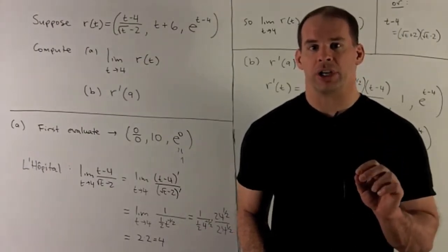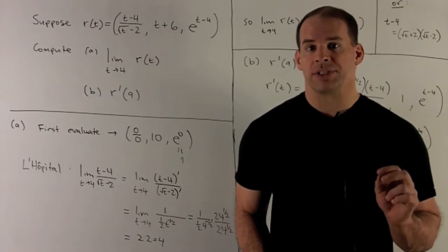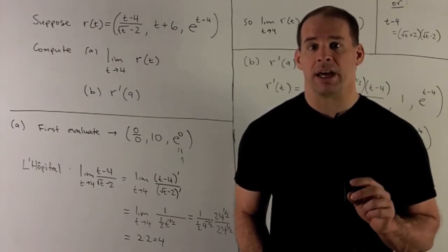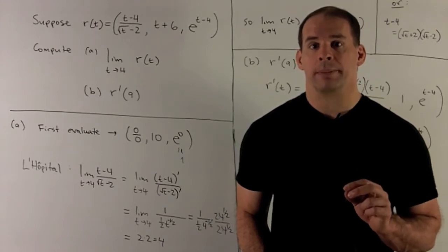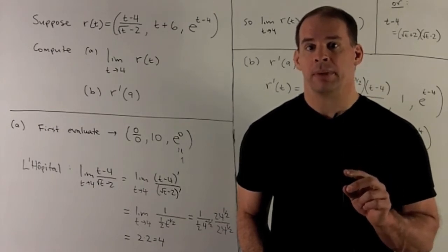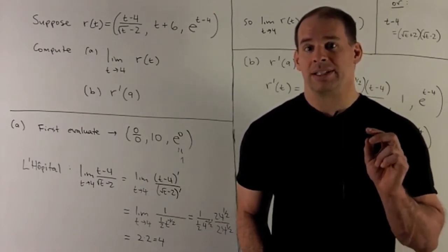We're given the vector function r(t) equal to (t-4)/√(t-2), t+6, e^(t-4). We want to find the limit as t goes to 4 of r(t), and we want the derivative of r at the point t equals 9.